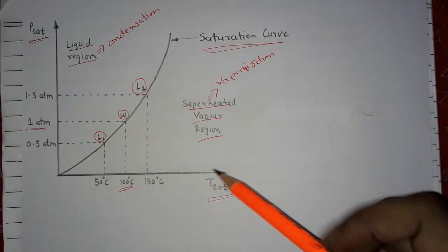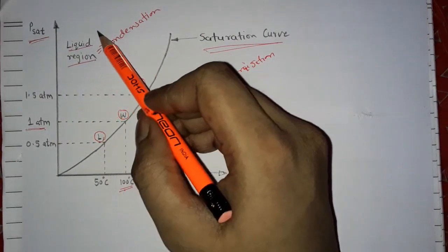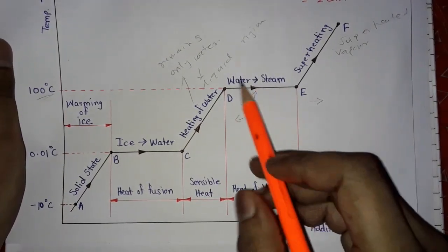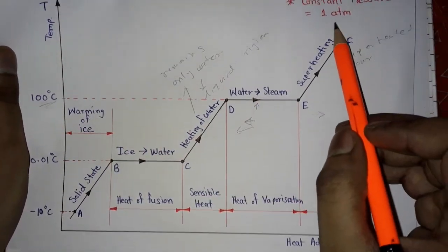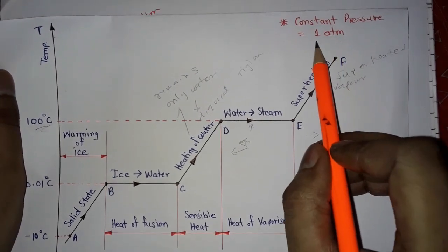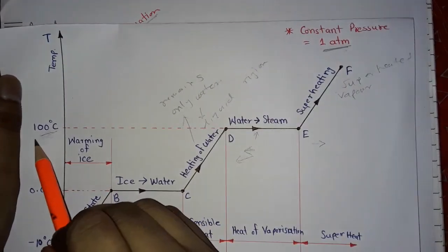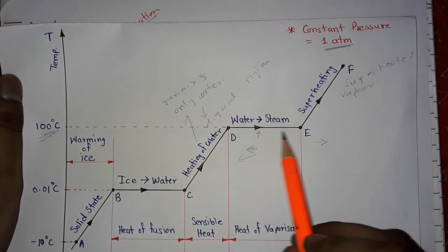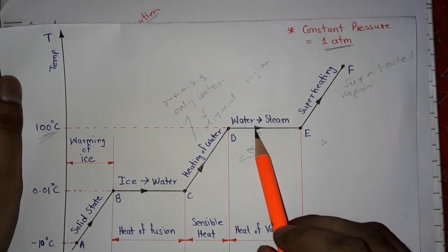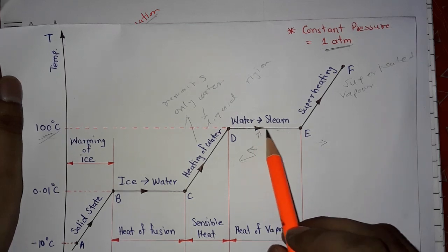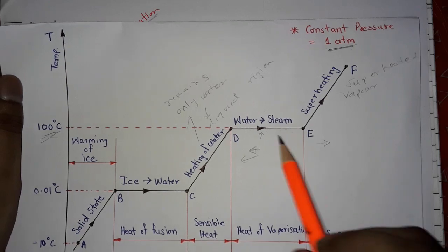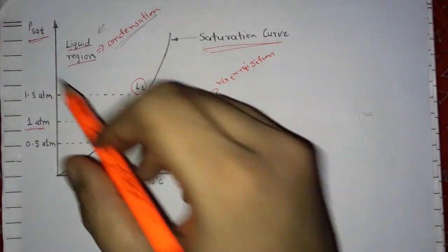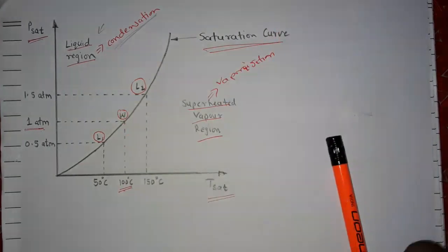In our saturation pressure versus saturation temperature graph, this is the liquid region. The line at 100 degrees Celsius and one atmospheric pressure — that is the saturation pressure — and at 100 degrees Celsius saturation temperature, condensation or boiling of water begins. This point is on the saturation curve of the graph.